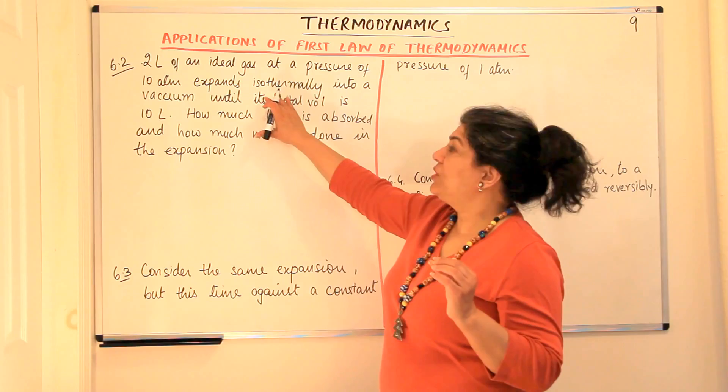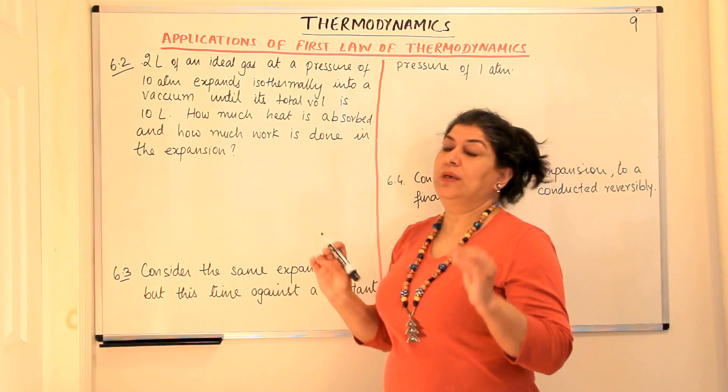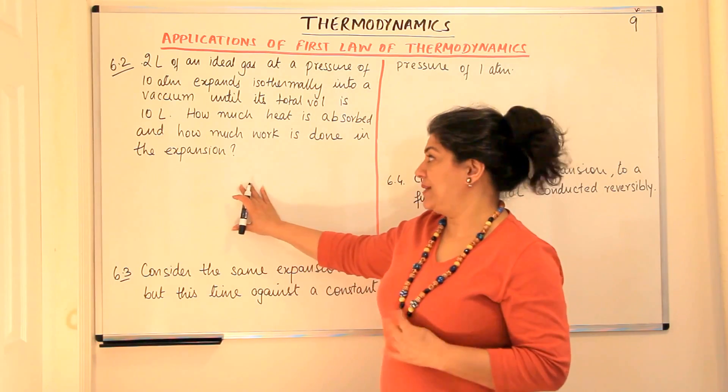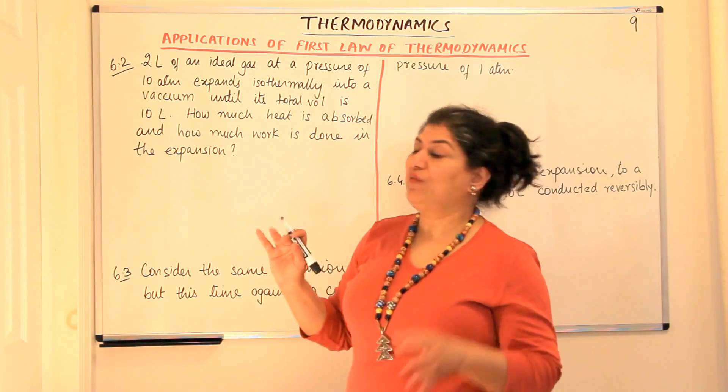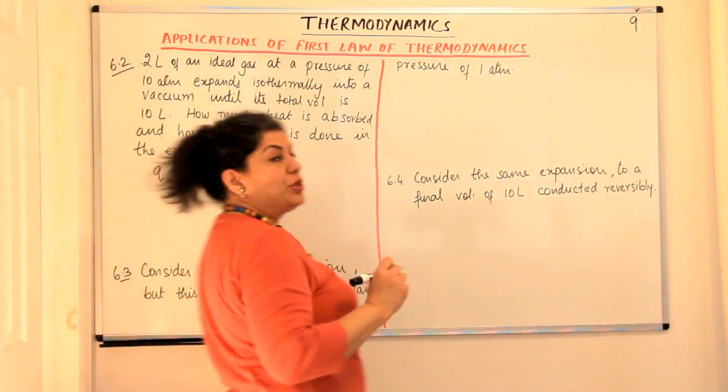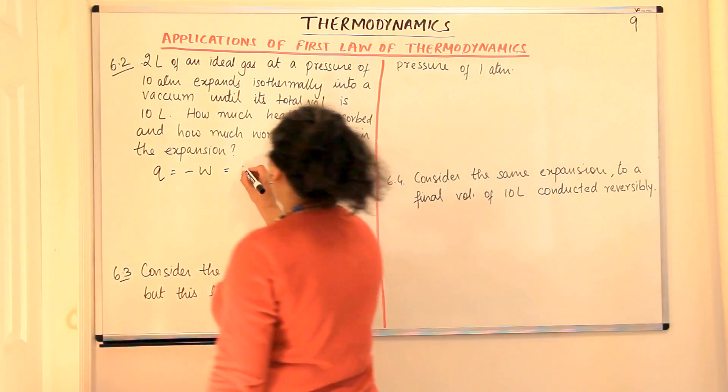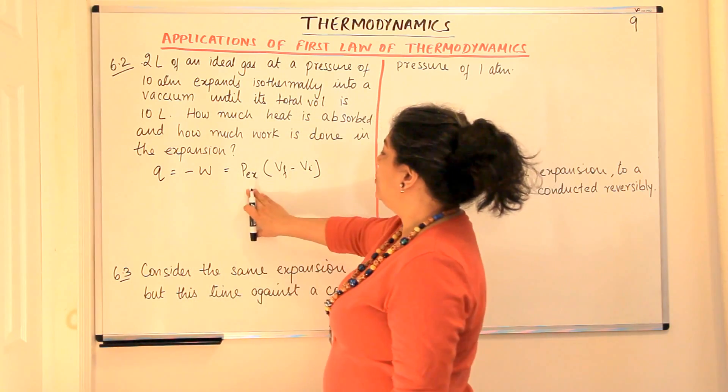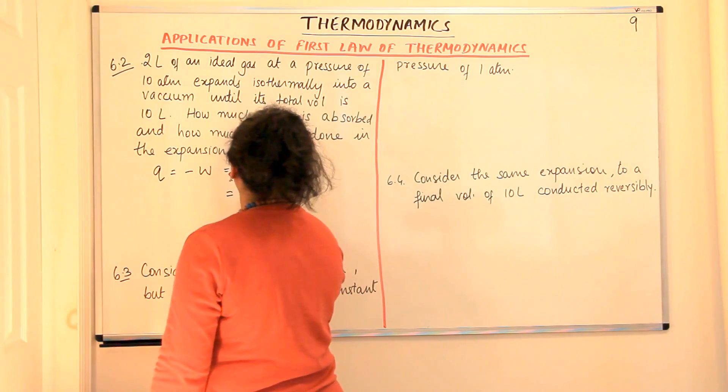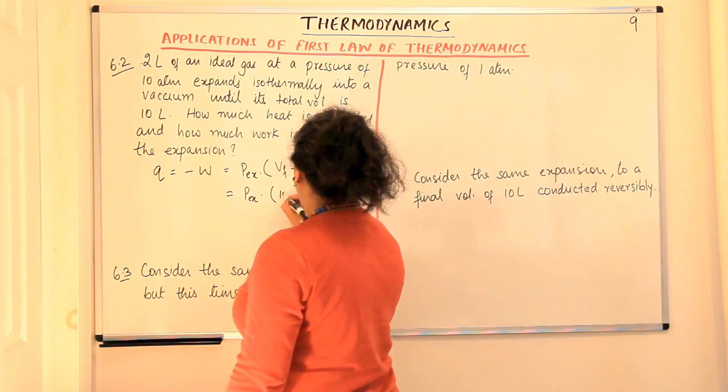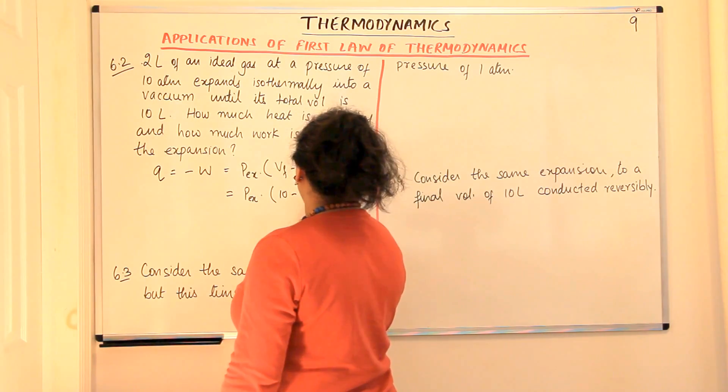For the isothermal expansion, we know that Q is equal to minus W and delta U is 0 in these cases for all isothermal processes. So we will use that formula Q is equal to minus W, minus negative work and what is work? Work is P external into V final minus V initial. Let me just write this on and V final is 10 liters minus 2 liters which means it is 8 liters.